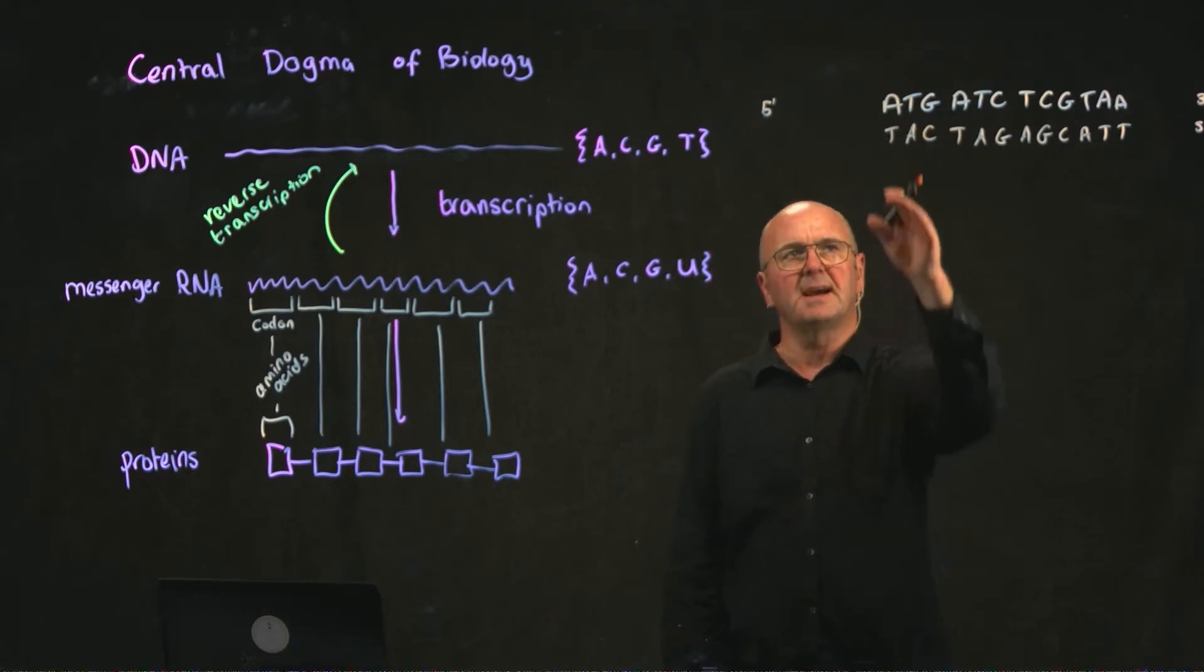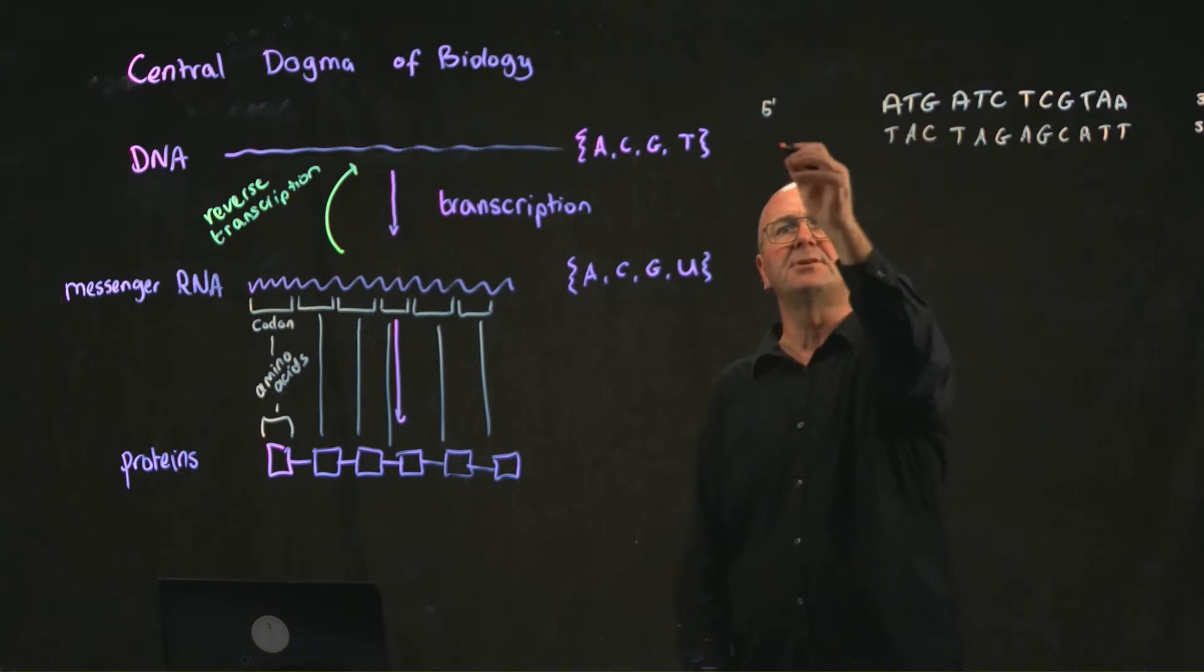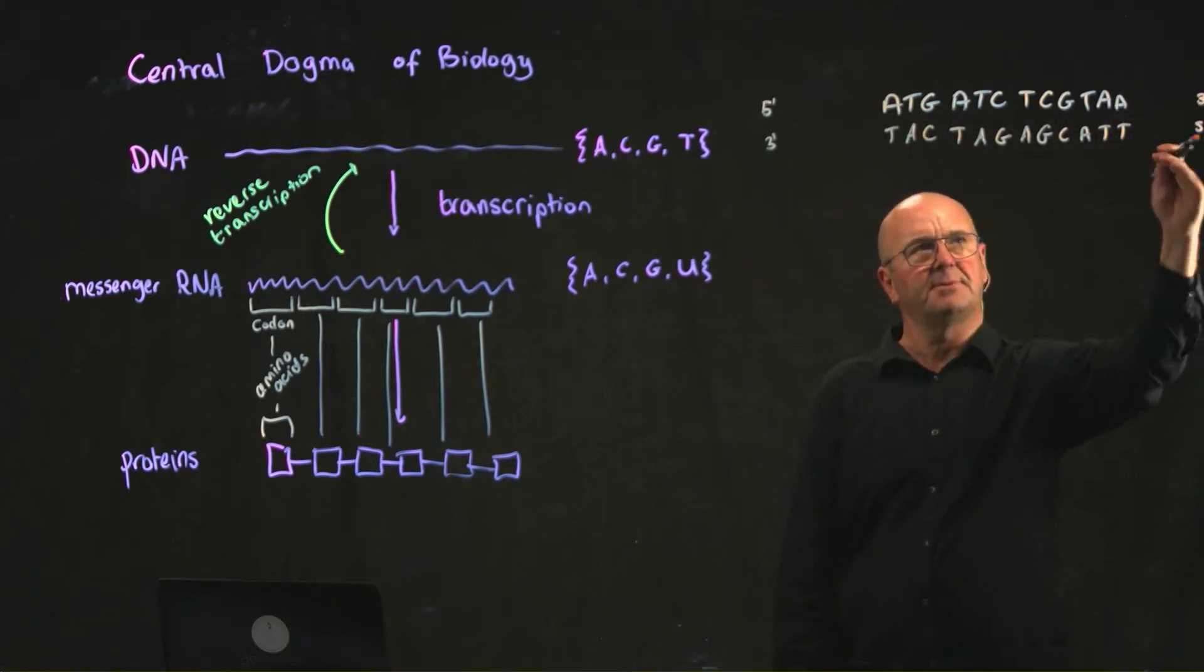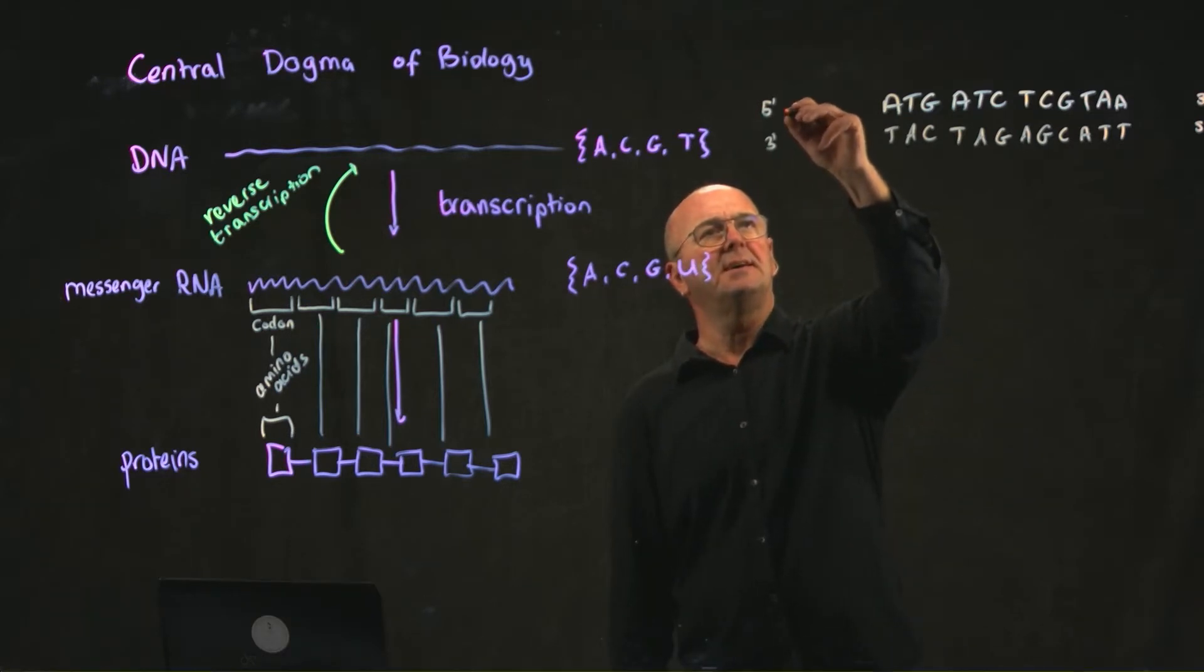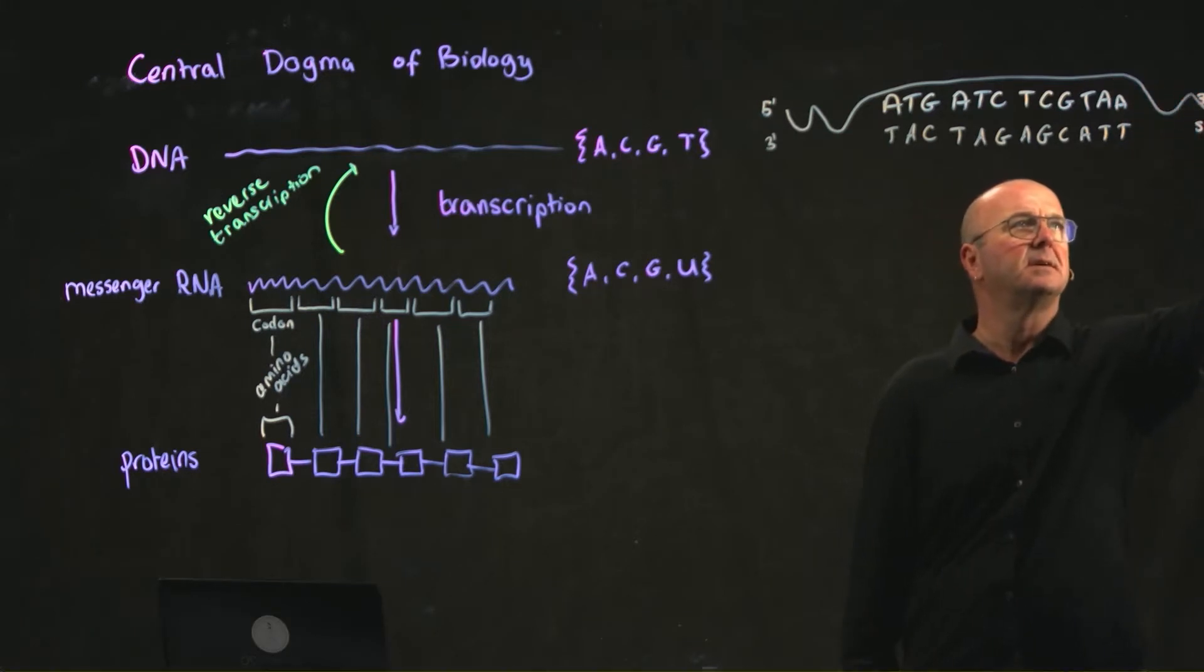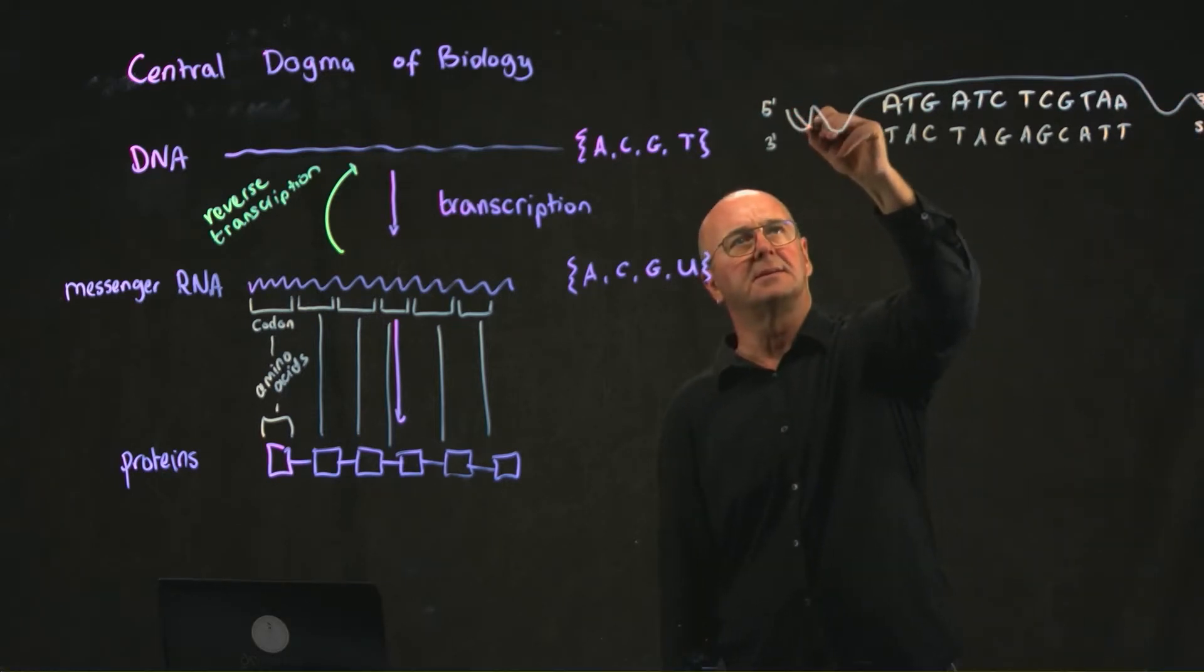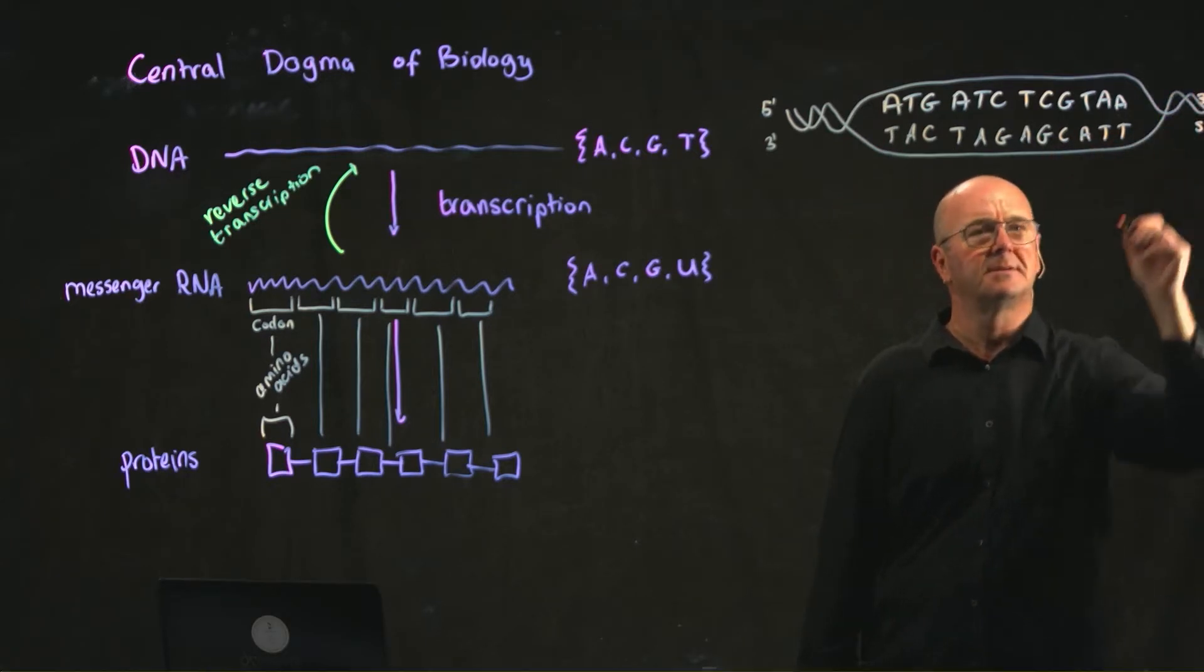And so we can, once we have one strand, we can always calculate the other. This is called the reverse complement because the top strand goes from left to right and the bottom strand goes from right to left. And so our DNA would look something like this. And here's the other piece. That's cool.